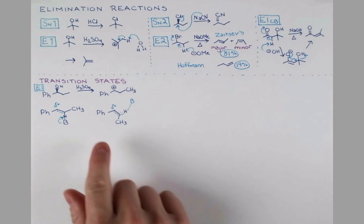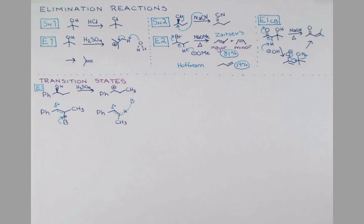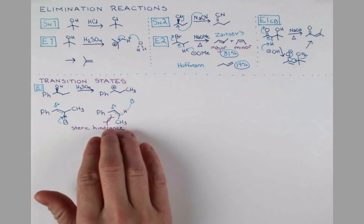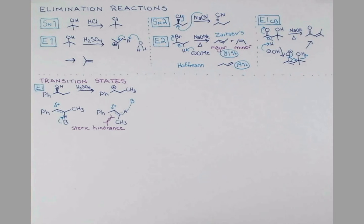Well, in this transition state, it's more crowded. This phenyl and CH3 are on the same side. They're kind of bumping into each other. We have this steric interaction. And because of the steric hindrance, this transition state is going to be favored with the groups on opposite sides, leading to the formation of the E-alkene preferentially.